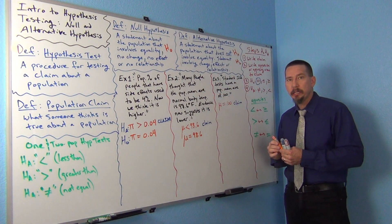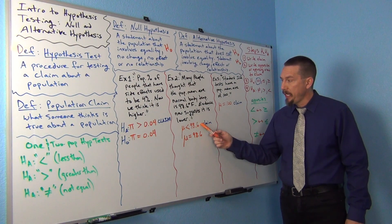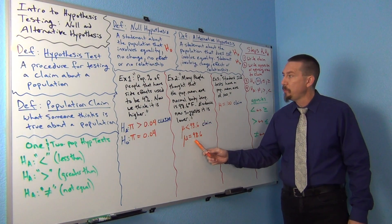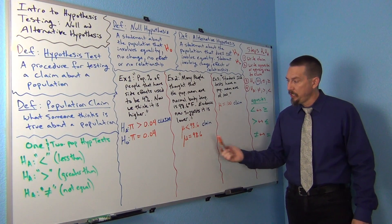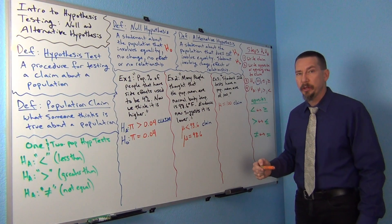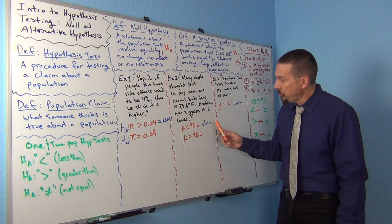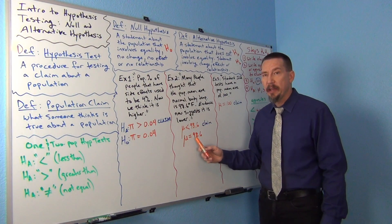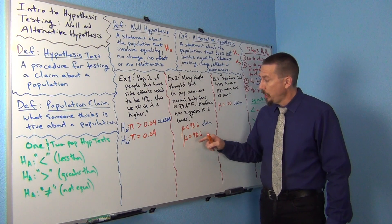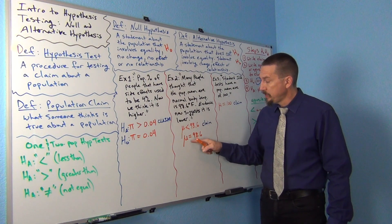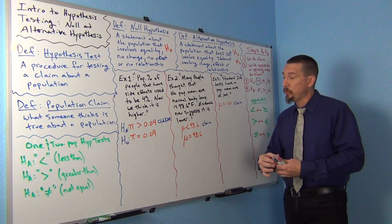Now notice the null and alternative hypothesis don't actually have to be true mathematical opposites. This one's less than and this one's equal to. Now decide what's the null and what's the alternative. Remember, claim has nothing to do with it.